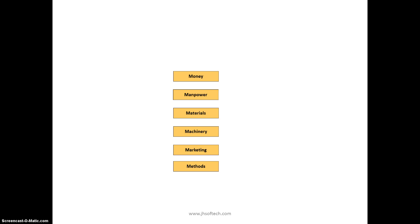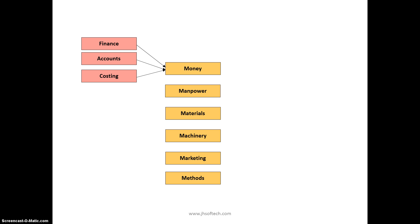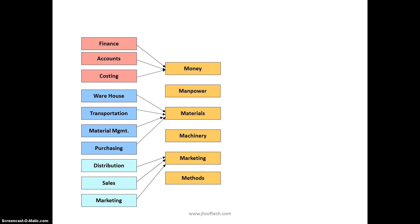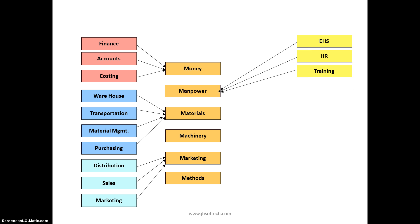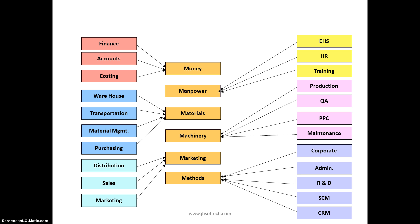Different resources are handled by different departments. Money is handled by the finance, accounting, and costing department. Manpower is handled by human resources. Materials are taken care of by warehouse management, transportation, material management, and purchasing. Marketing is handled by distribution, sales, and marketing. Manpower is also covered by EHS, HR, and training. Machinery is managed by production, quality analysis, production planning, controlling, and maintenance. Methods are handled by corporate administration, R&D, supply chain management, and customer relationship management.